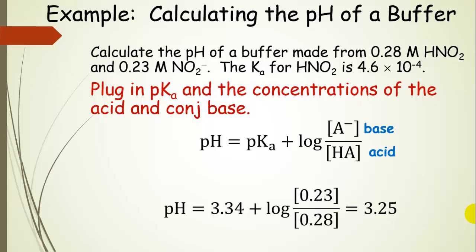Next, we're going to plug in the concentrations of our acid and conjugate base. And so if we go up here, we find 0.28 molar nitrous acid. Let's go ahead and plug that in for HA. And 0.23 molar for nitrite. Plug that in. And when we do the math, 3.34 plus this log term, we're going to get 3.25. So that is the pH of our buffer.